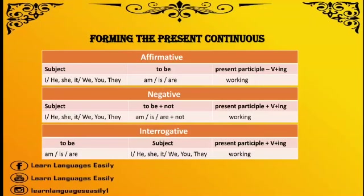To make negative forms, the word NOT is used, which can usually join with the subject or auxiliary verb 'be' in contracted form. So here are negative form sentences: I am not working now. He is not working now. She is not working now. It is not working now. We are not working now. You are not working now. They are not working now.